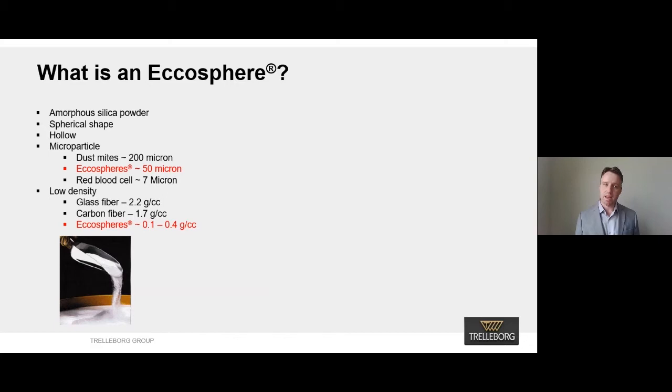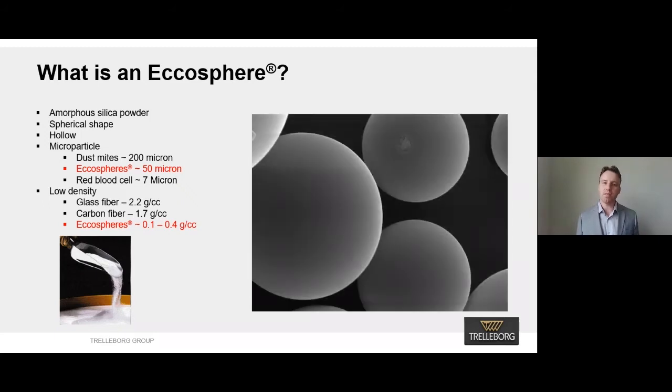A hollow glass microsphere, and specifically the ecosphere, are an amorphous silica powder. They're very spherical in shape. They're hollow. They are at the micro size, about 50 microns on average, changes a little bit depending on the grade, and they're very low density. And that's key because the low density is what imparts the functionality to the filler that gives you advantages in the formulation. So what this all means is that the product truly is a microscopic glass bubble.